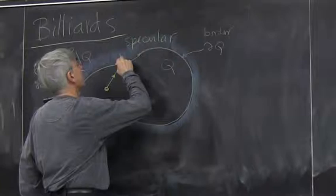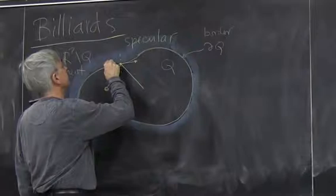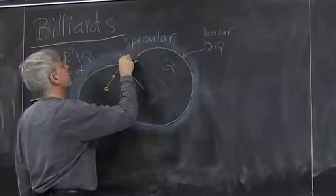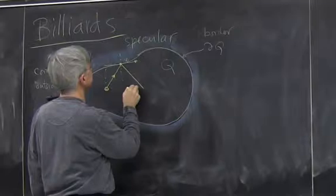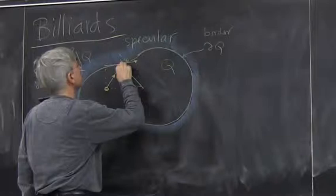And what happens in mirror reflection is that the parallel component of the velocity remains the same. So if this was velocity vector, then V parallel remains the same, but the perpendicular component, perpendicular to a unit vector.